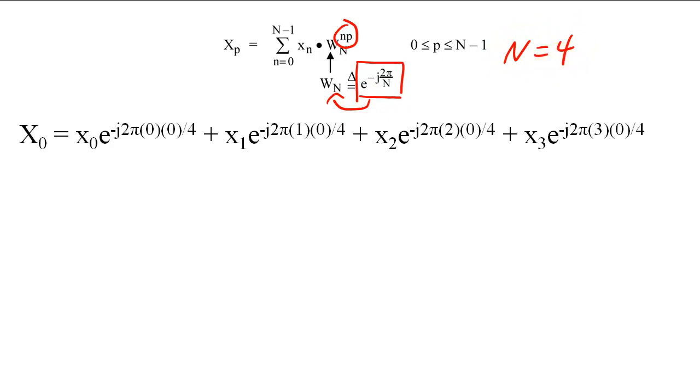The first DFT value is computed by raising every W sub n to the power indicated by the time index, and also by raising every W sub n to the power indicated by the DFT sample index.